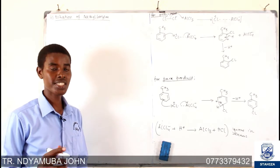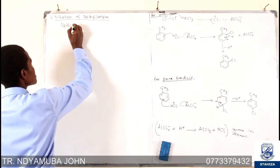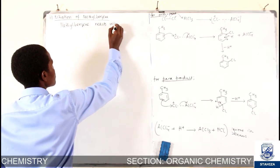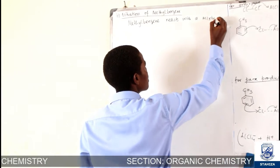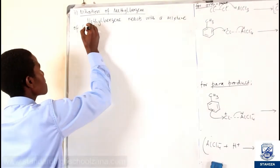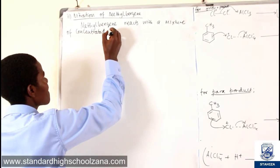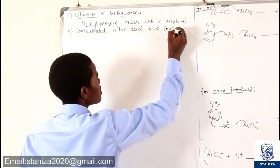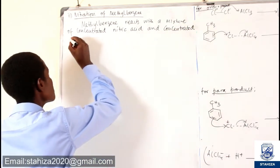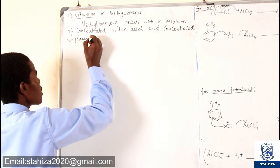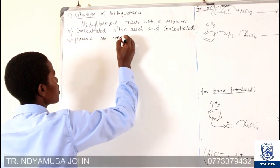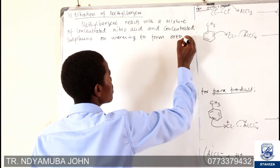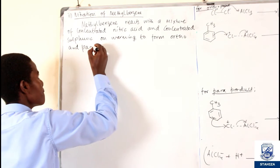Methyl benzene reacts with a mixture of concentrated nitric acid and concentrated sulfuric acid on warming to form ortho and other products.